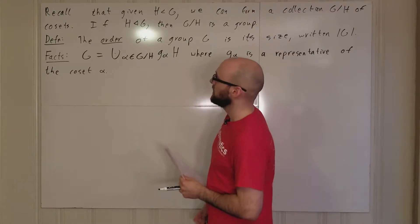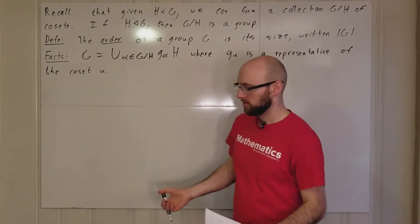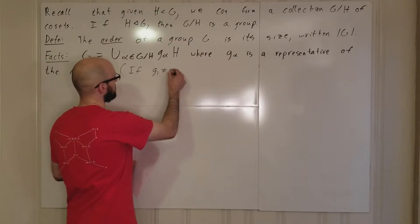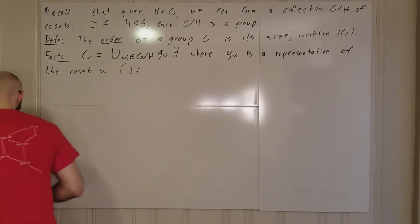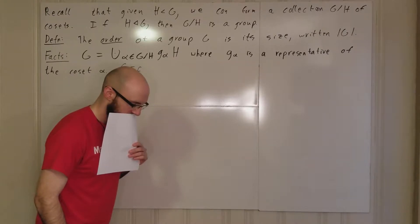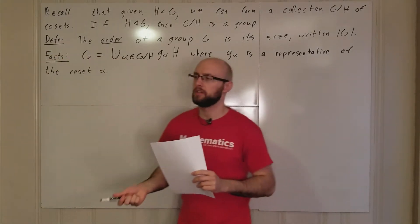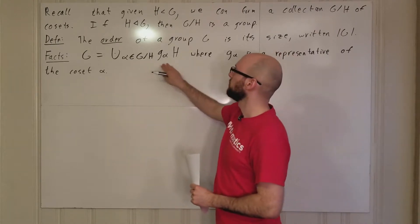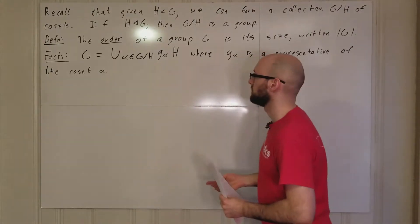This is a disjoint union because every single coset is disjoint. Different cosets are disjoint because they're equivalence classes. Equivalence classes partition a set, so their intersection is going to be empty. If you take any two elements of two equivalence classes, their intersection is going to be empty.